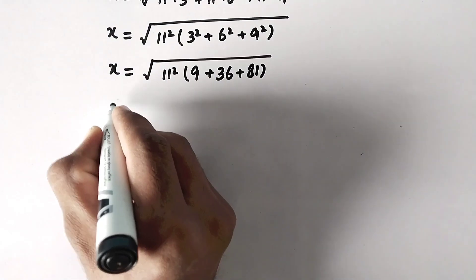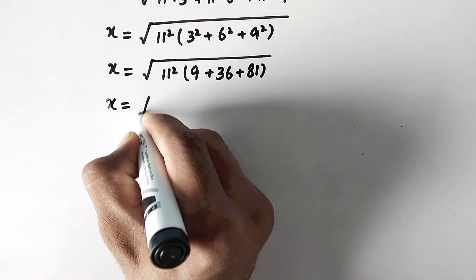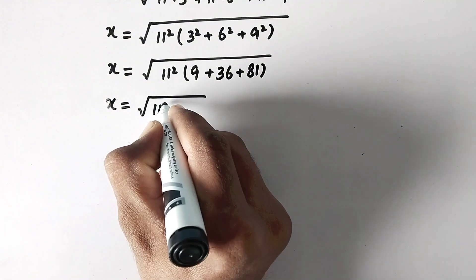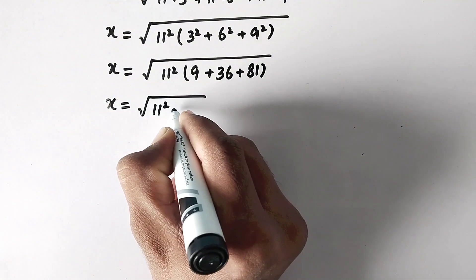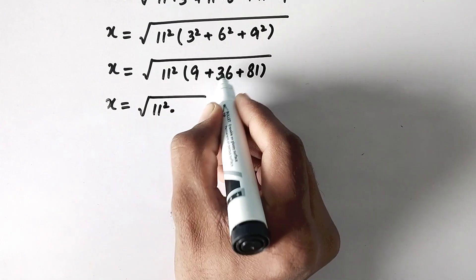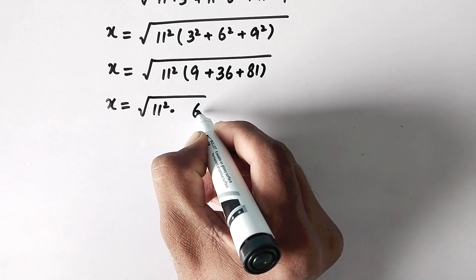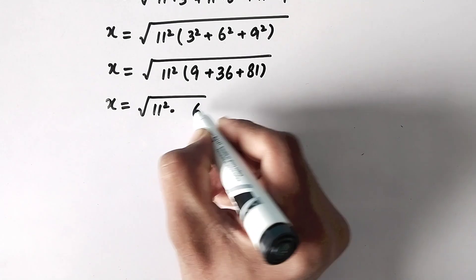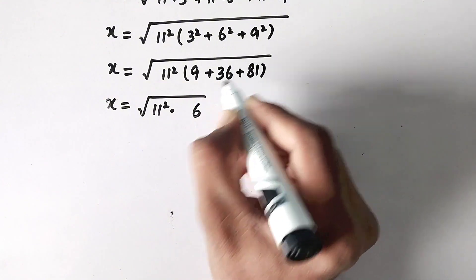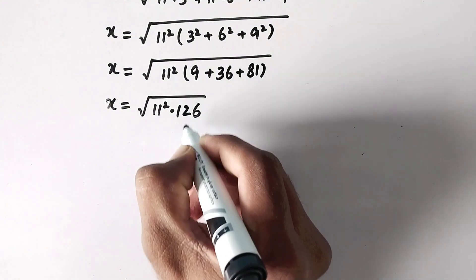So now x will be equal to the square root of 11 squared times the sum: 9 plus 36 plus 81, which equals 126.